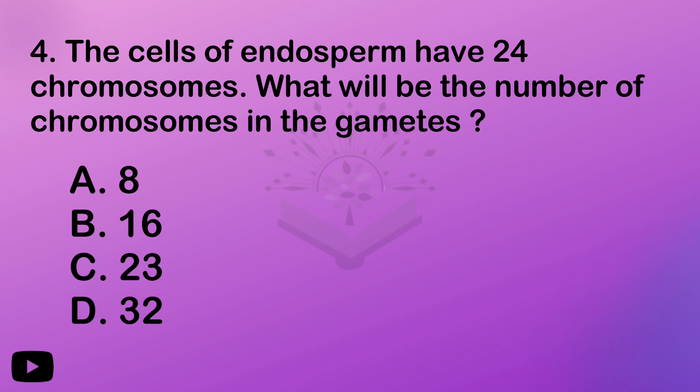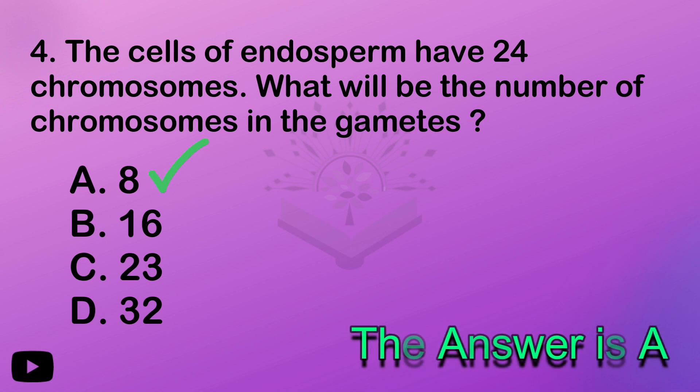Parthenocarpy is the development of fruit without fertilization. The example from parthenogenesis — if you have a banana, banana is the answer. Option A is the answer. Fertilization will normally produce a fruit — that's the process.